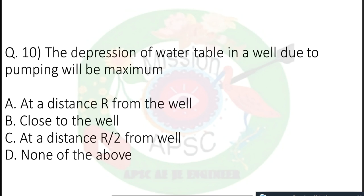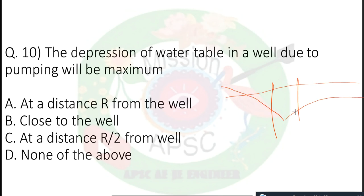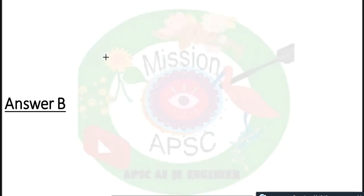Next, question number 10: The depression of the water table in a well due to pumping — where will it be maximum? When you pump water from a well, the water table around it creates a variation. The depression of the water table in a well due to pumping will be maximum close to the well. So the correct answer is option B: close to the well.